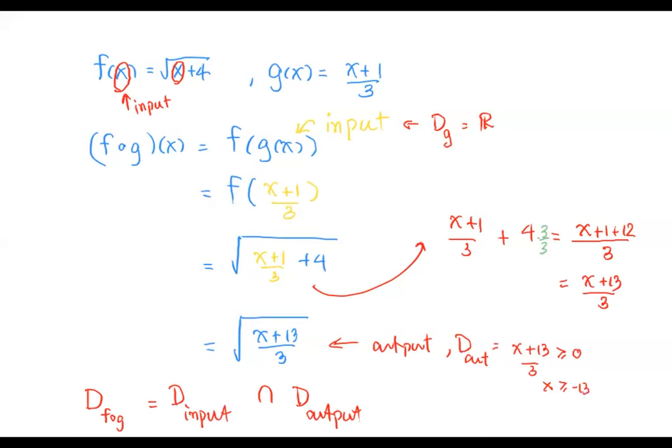Now we're going to take, let's see what we have. We have the domain of the input as the set of all real numbers, and the domain of the output as the real numbers greater than or equal to negative 13. The intersection of these two is the smaller one, which is the portion where x is greater than or equal to negative 13.